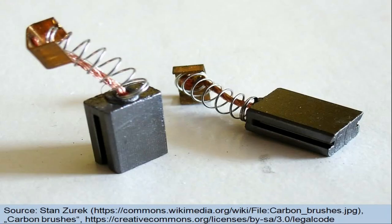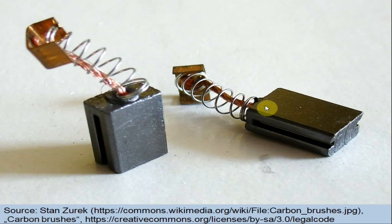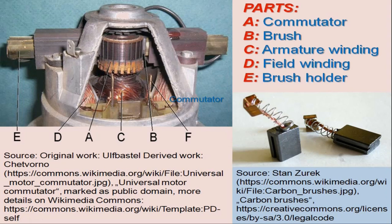The brushes are the means by which the current is collected from or conducted to the armature coils via commutator. The brushes are usually made of carbon or graphite and are in the shape of a rectangular bar. Each brush is supported by a metal holder known as a brush holder. A spring is usually used to adjust the pressure exerted on the commutator segments by each brush through its respective brush holder, in order to avoid excessive wear and to ensure proper electrical connection between the rotating commutator and the external circuit. An imperfect contact between the commutator and brushes due to inadequate pressure may certainly lead to sparking.